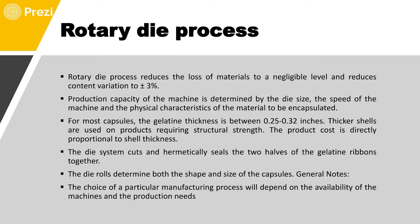The rotary die process reduces the loss of materials significantly. In the plate process, a lot of gelatin and mass was being wasted. The rotary die process is very efficient in that it reduces material loss to a negligible level and has the least content variability. The production capacity is determined by die size, machine speed, and the physical characteristics of the material to be encapsulated. For most capsules, the gelatin thickness is between 0.25 to 0.32 inches.